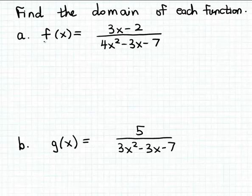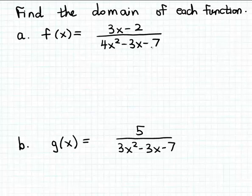In this example, we're going to find the domain of a couple of functions. Let's start with part a. We want to find the domain of this function f. We're going to be looking for values for x — values for the input — that will make the denominator of this fraction zero, because we cannot divide by zero. We want to exclude those numbers from the domain. We can methodically find those values by taking the denominator and setting it to zero, then solving the resulting equation.